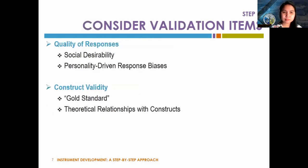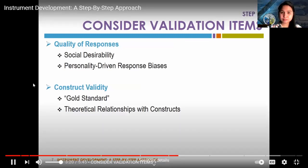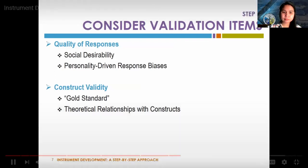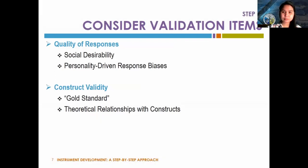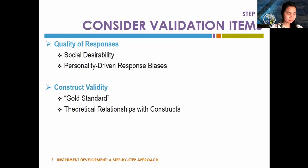When we develop new instruments, we have to think ahead about how to demonstrate their validity. A common approach is to administer other items alongside our new ones — for example, questions from a social desirability instrument or a personality instrument — to help understand how the collected data might be biased. We can also examine construct validity by measuring constructs theoretically related to our construct of interest, or include an established gold standard instrument for comparison.